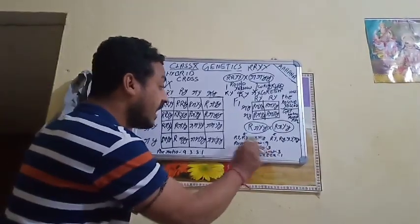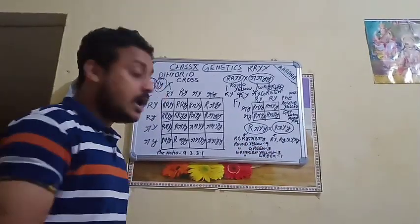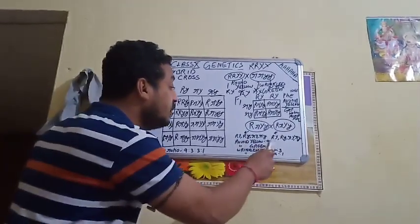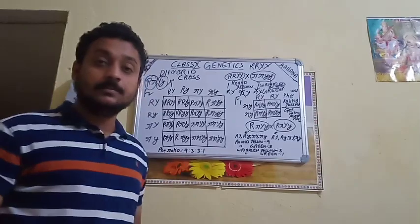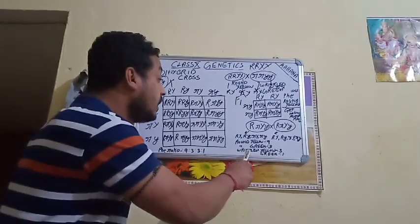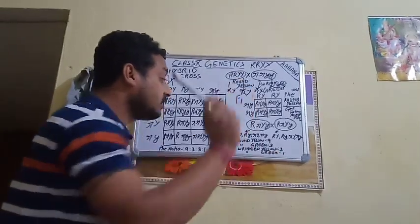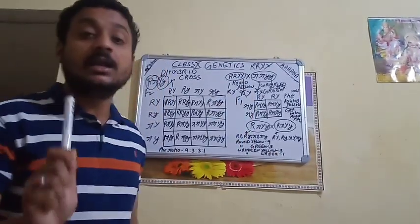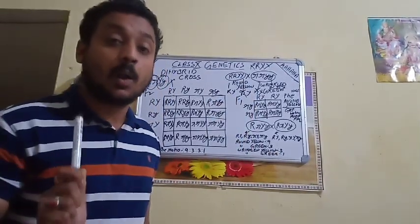From the F2 generation Punnett square results: round yellow we will get 9, round green we will get 3, wrinkled yellow we will get 3, and wrinkled green we will get 1. This gives us the 9:3:3:1 ratio.